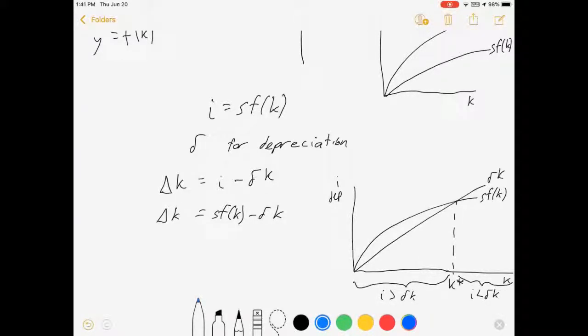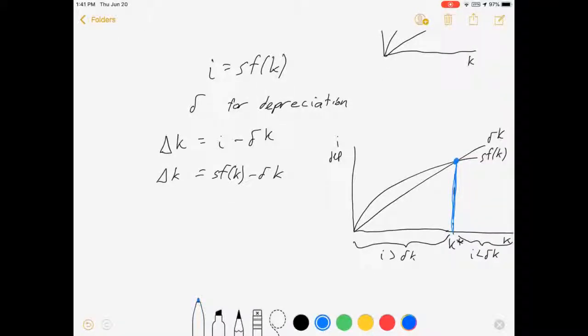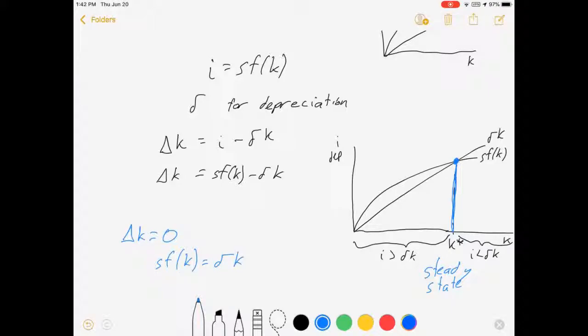And we expect eventually to wind up here at this level where our economy is stable, it's steady, it no longer has growing or falling capital. We call this the steady state. Now, a little bit more formally, a steady state is when delta k equals zero. In other words when S F of k equals delta k, the point where these two curves hit each other. Where our capital stock per worker is no longer having any reason to change.